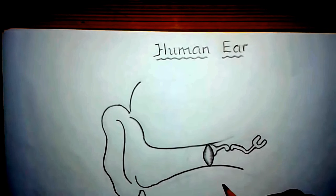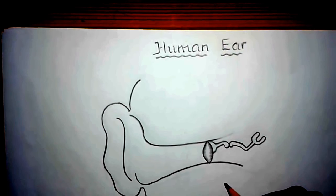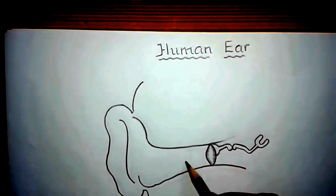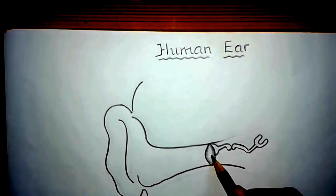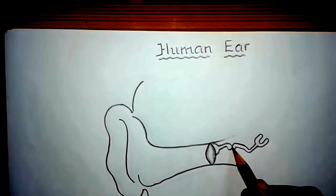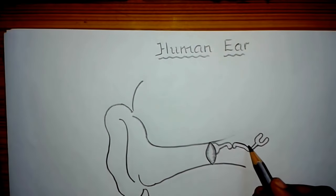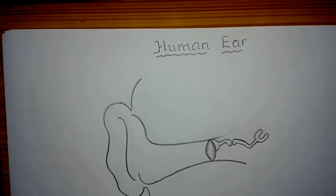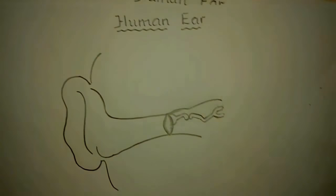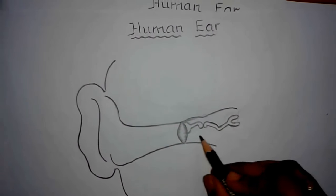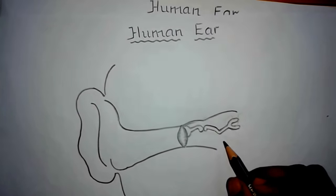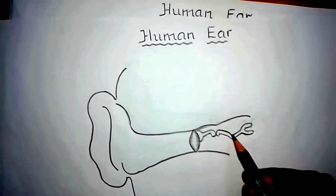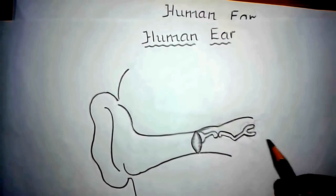So all three bones are attached to each other. The vibration of the tympanum is transmitted by the movement of these bones. So these three bones form the middle ear — that is the malleus, incus, and stapes.